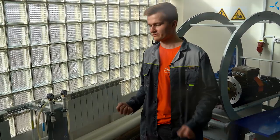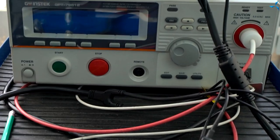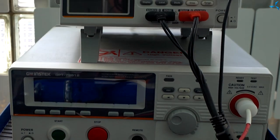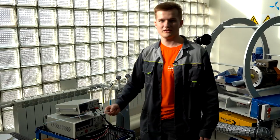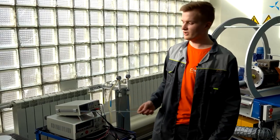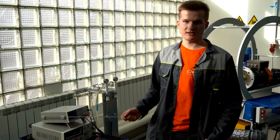The next workstation is equipped with a milliohmmeter and megohmmeter, as well as scales. The milliohmmeter is used to measure the resistance of a particular coil. The megohmmeter is needed to detect insulation breakdowns in the wound motor.